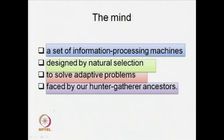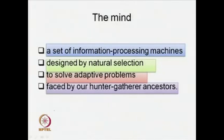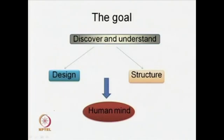The mind is also, second, designed by natural selection in order to solve adaptive problems which we have faced — our hunter-gatherer ancestors have faced. We saw in the last lecture that it is important to realize that our minds are not designed to solve our current problems as much as they are designed to solve certain evolutionary or adaptive problems. The goal, therefore, of evolutionary psychology was to discover and understand the design and structure of the human mind.